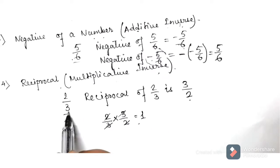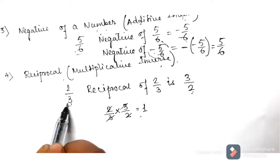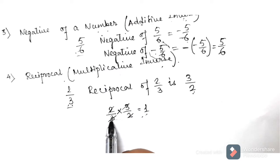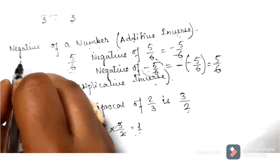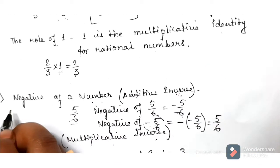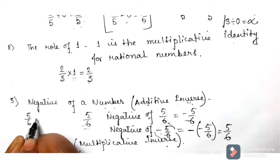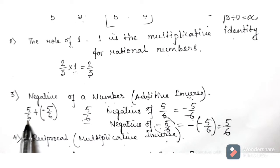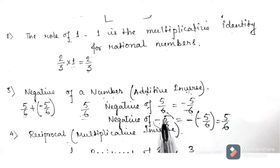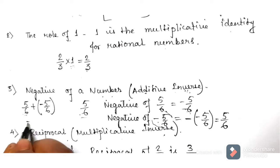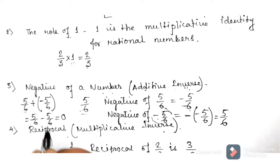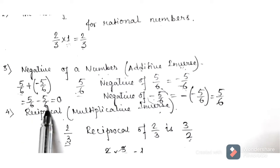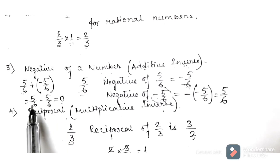If after multiplication we get 1, then we can say that each is the multiplicative inverse of the other. Similarly, to check additive inverse: if one number is 5 by 6 and another is minus 5 by 6, and you add them together to get 0, then we can say that one number is the additive inverse of the other.